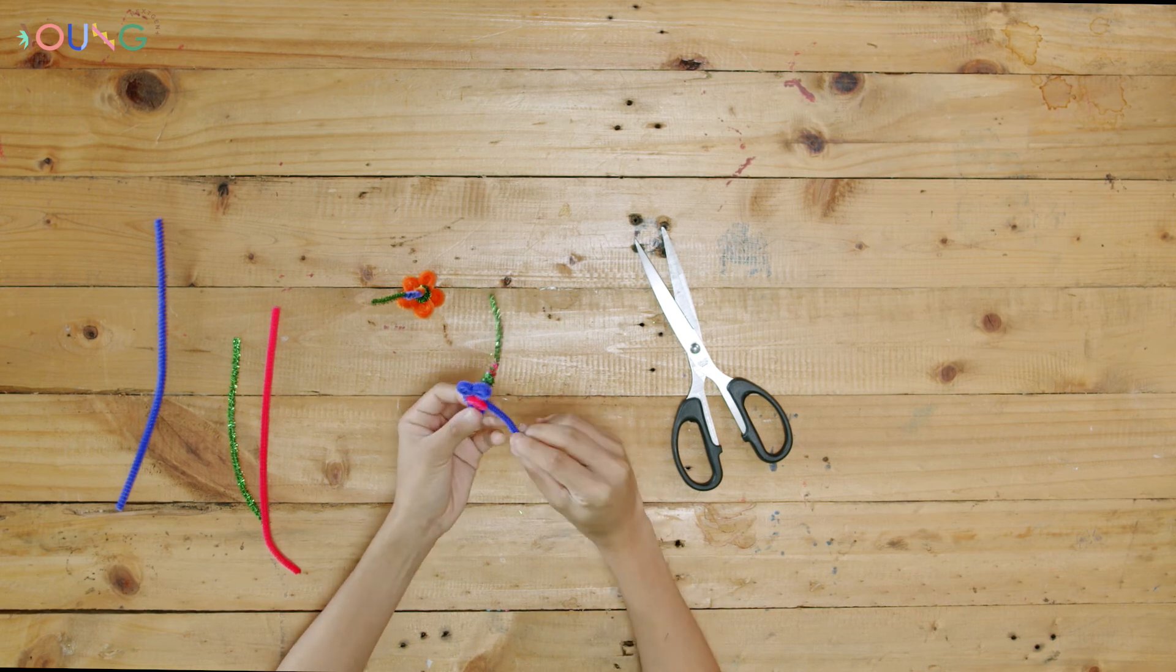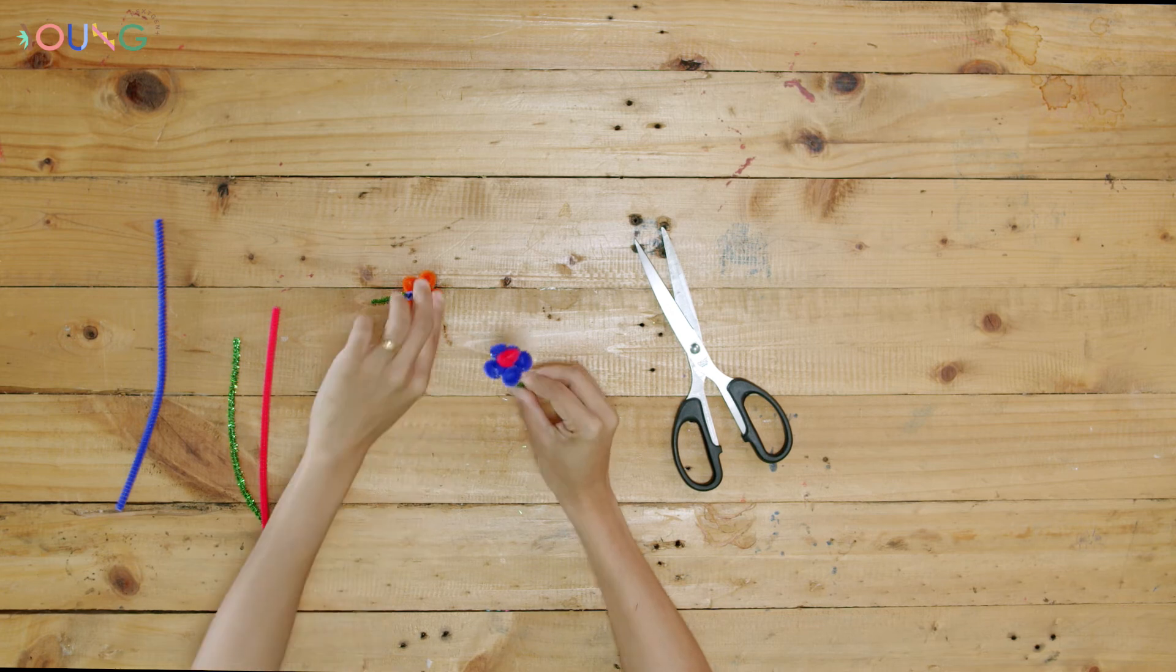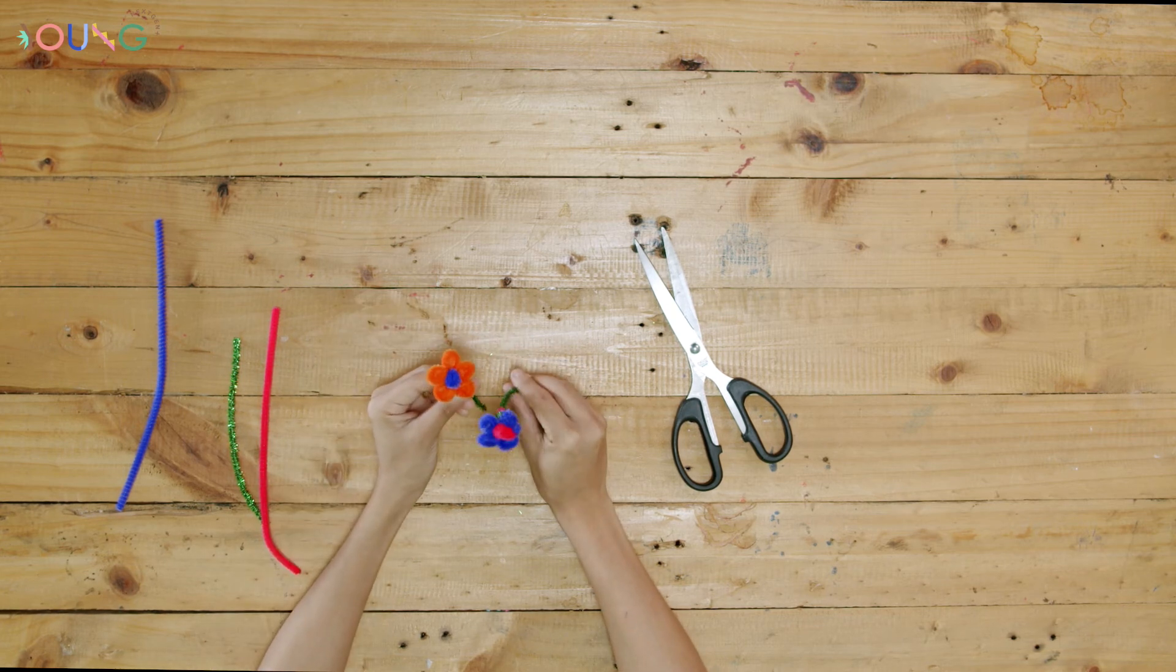And there you go! Your beautiful pipe cleaner flower. You can make more of them and put them in a small vase to decorate your table.